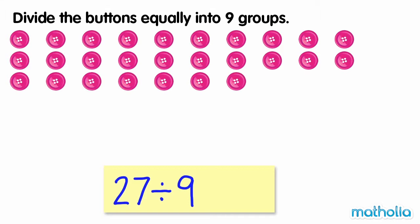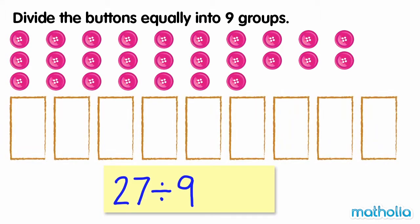Let's draw 9 empty groups, then place a button into each group until we have used up all of the buttons.